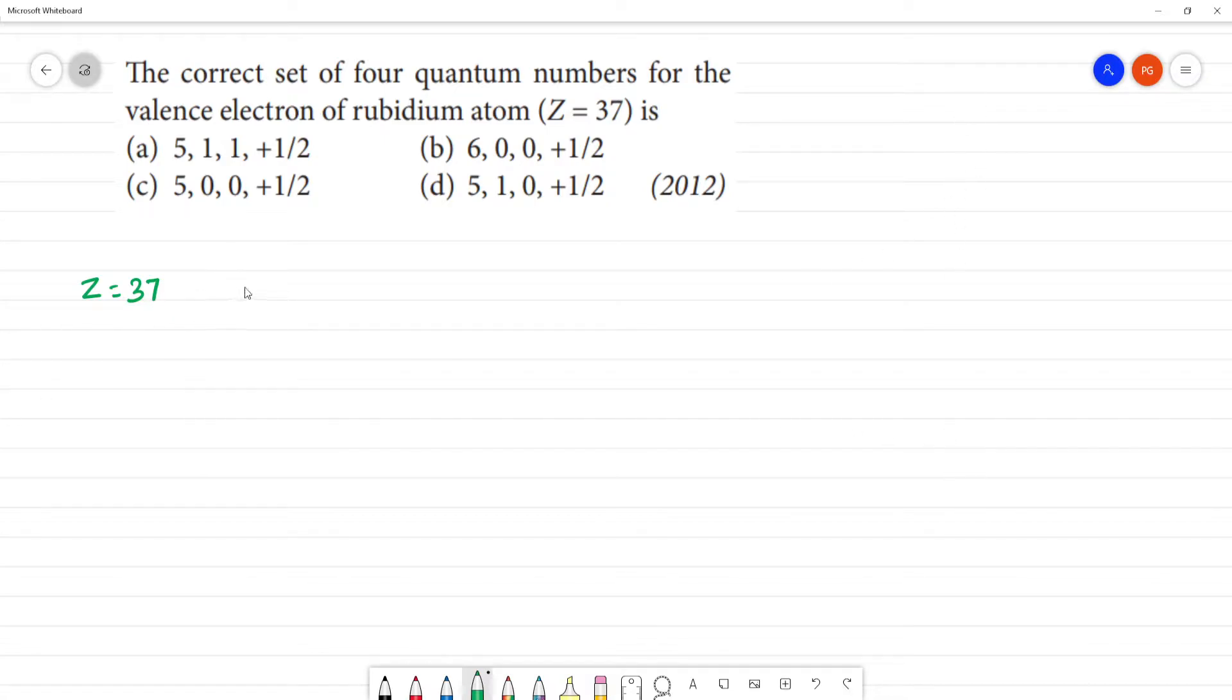Electronic configuration: 1s2, 2s2, 2p6, 3s2, 3p6, 4s2, 3d10, then 4p6, 5s1.